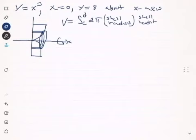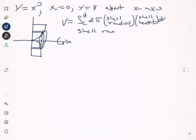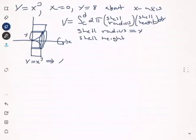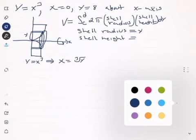We integrate with respect to y. The radius of the shell is the distance moved from the axis, which is y units. To find the shell height, the function must be expressed as a function of y: y equals x cubed means x equals the cube root of y, which is y to the one-third power. That is the height of the shell.